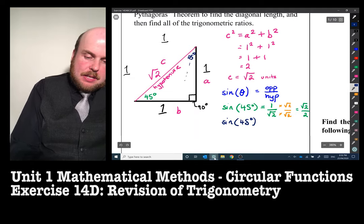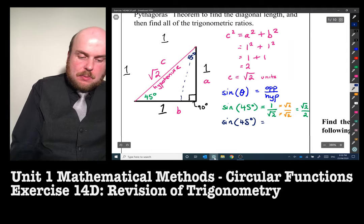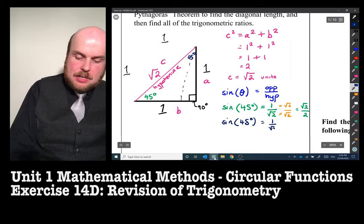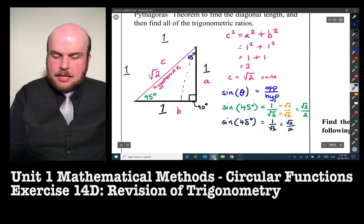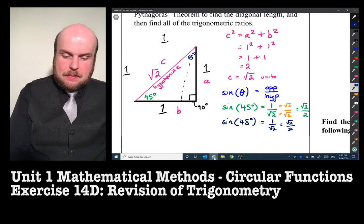We can do sine of 45 degrees. So that's this side here. That's again opposite over hypotenuse, so one over root two, which again will equal root two over two. Excellent. So that's sine. So hopefully remember, sine is opposite over hypotenuse.